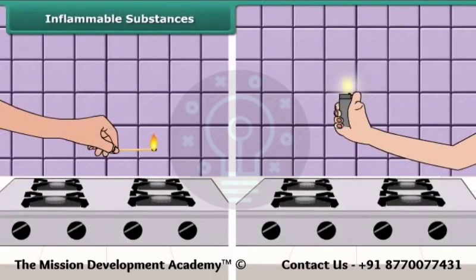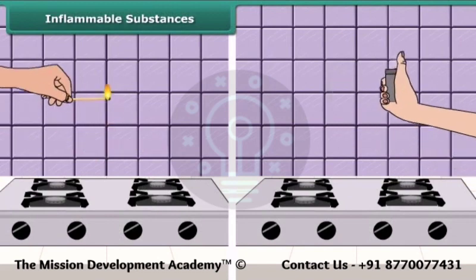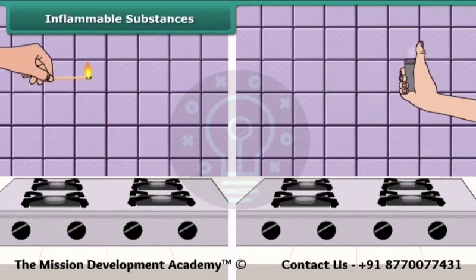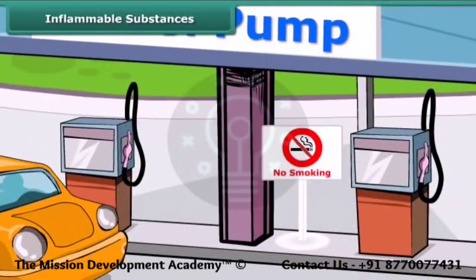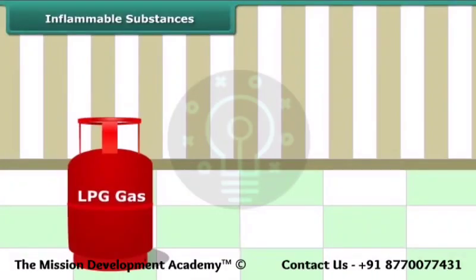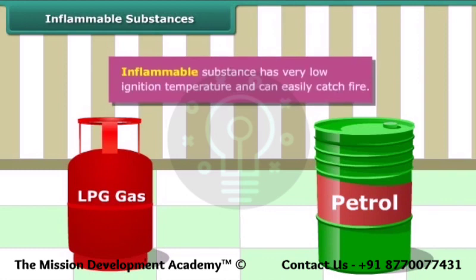Your mother would have told you to keep a burning matchstick or a lighter away from the LPG gas stove in the kitchen, because LPG catches fire very easily. Similarly, you must have seen a no-smoking sign posted at petrol pumps. It is because petrol also catches fire very easily, and therefore it is advisable not to smoke at petrol pumps. Substances like LPG and petrol are inflammable because they have low ignition temperature, due to which they readily catch fire.